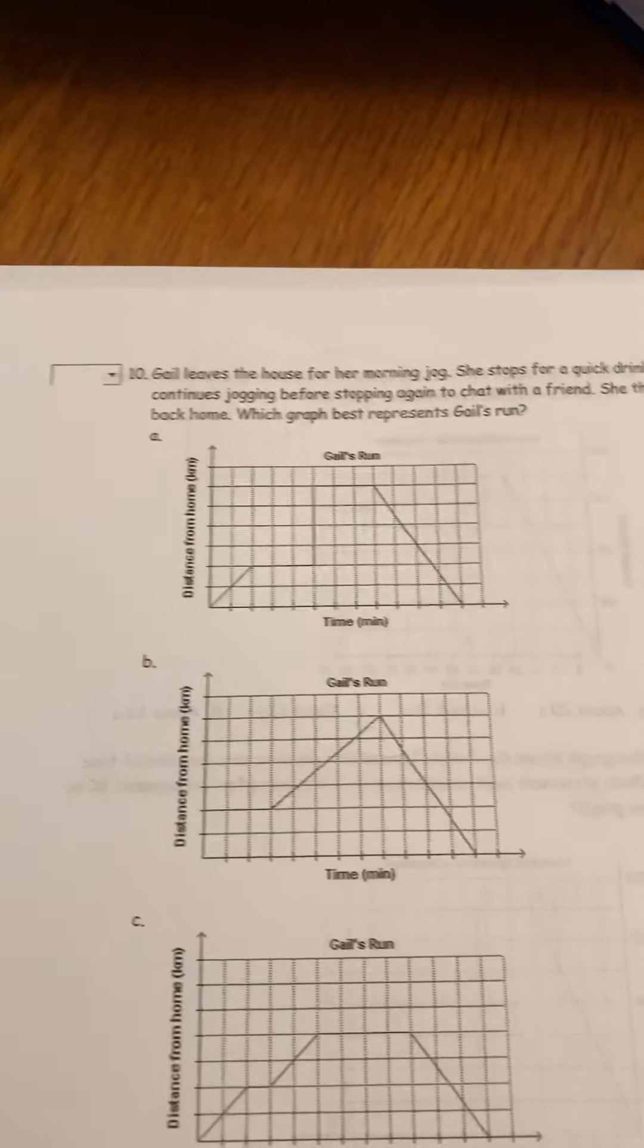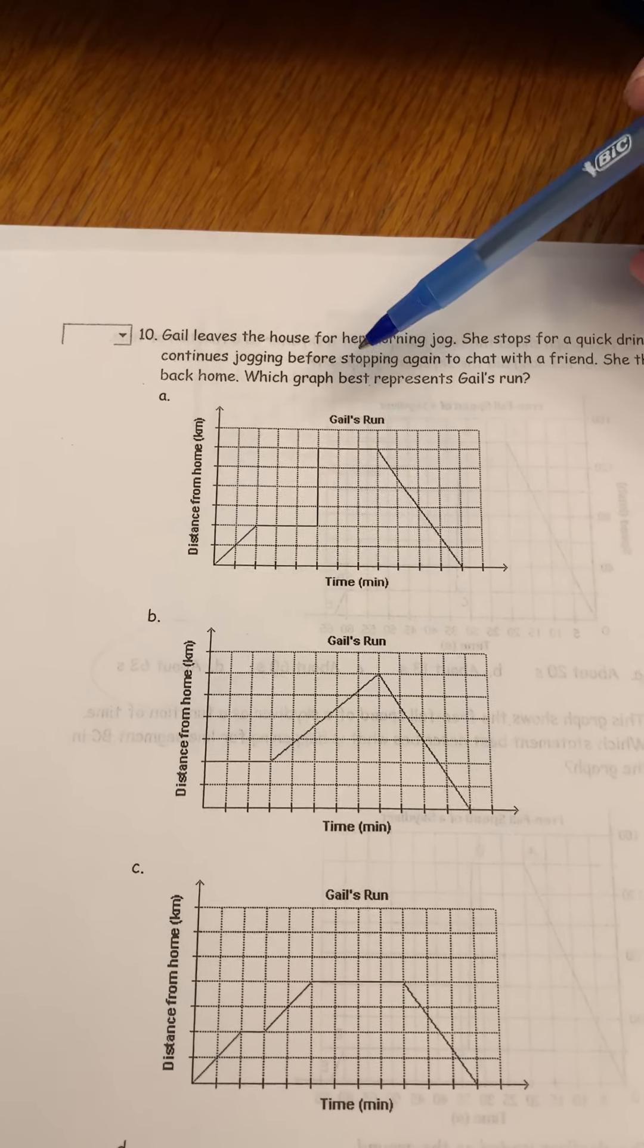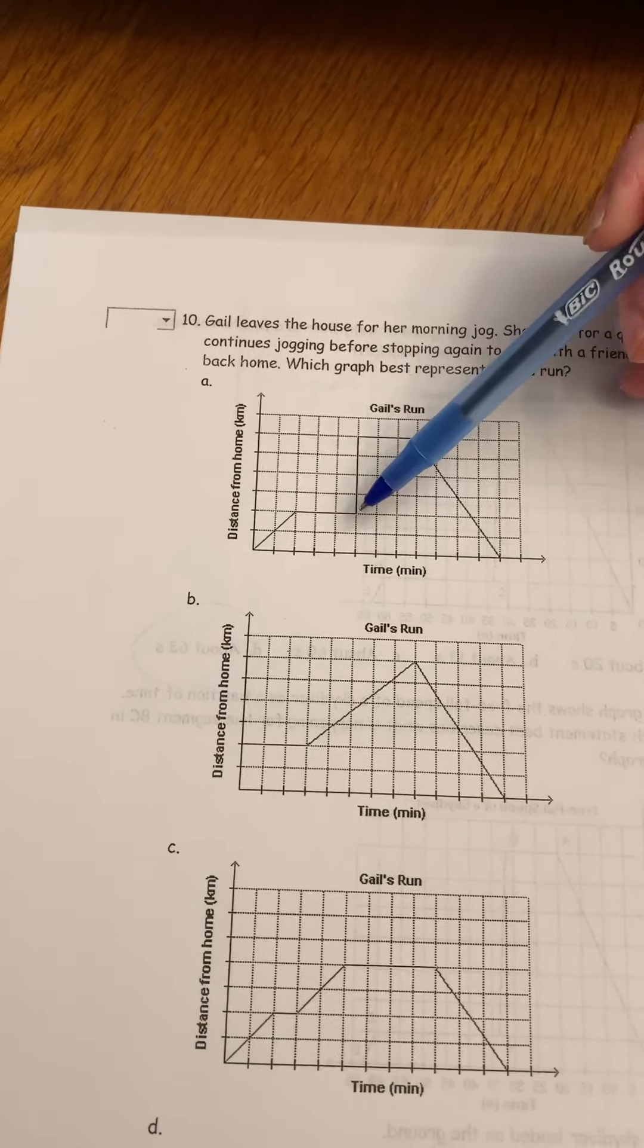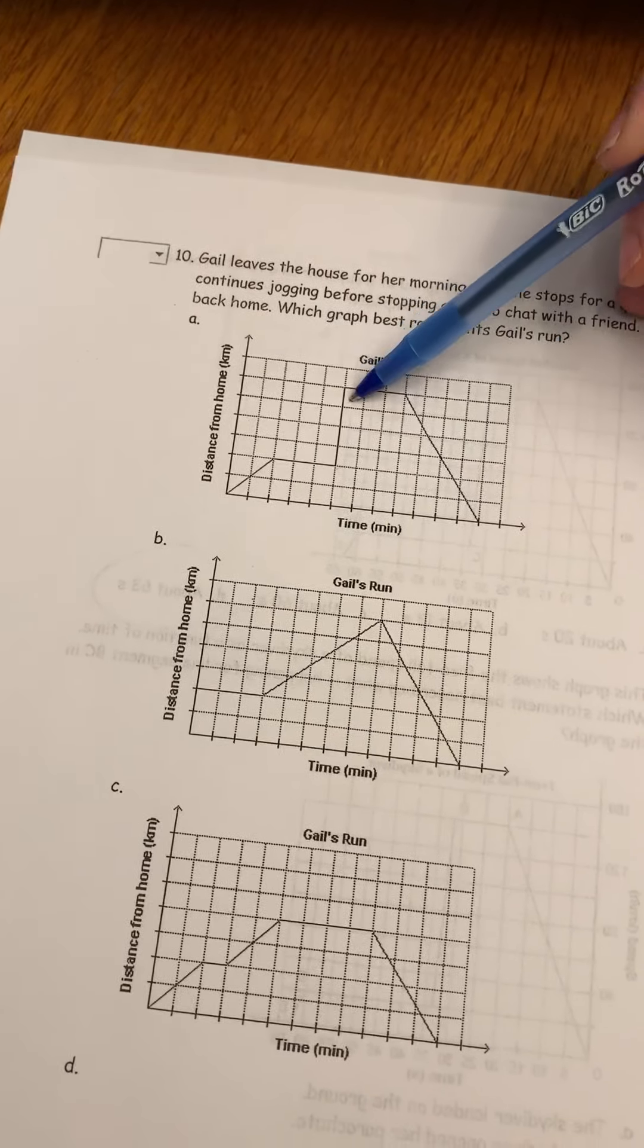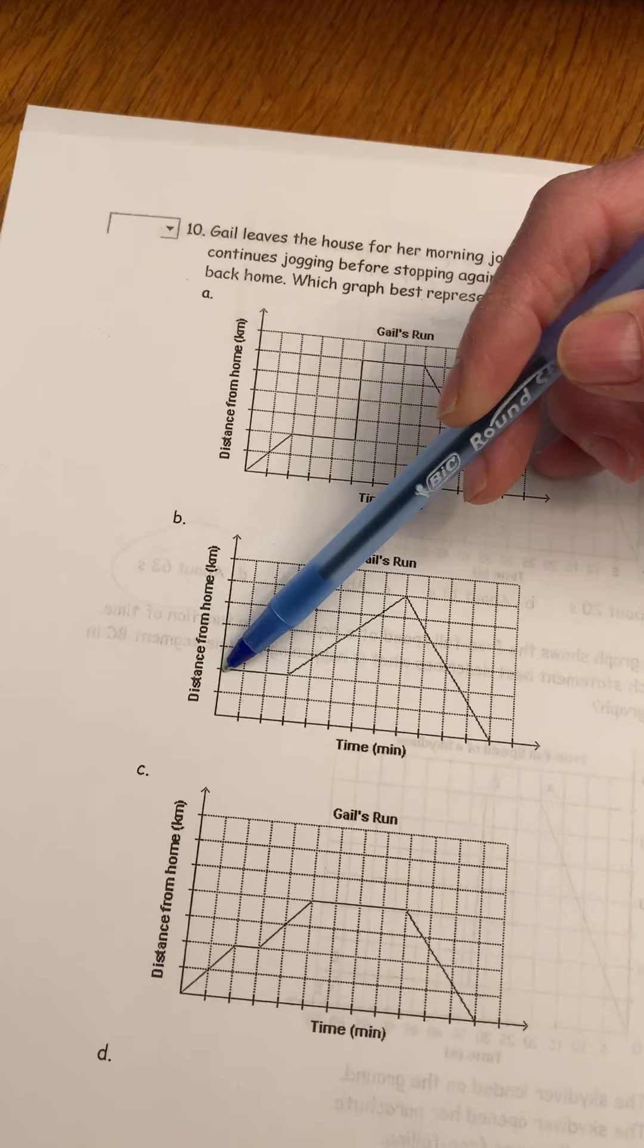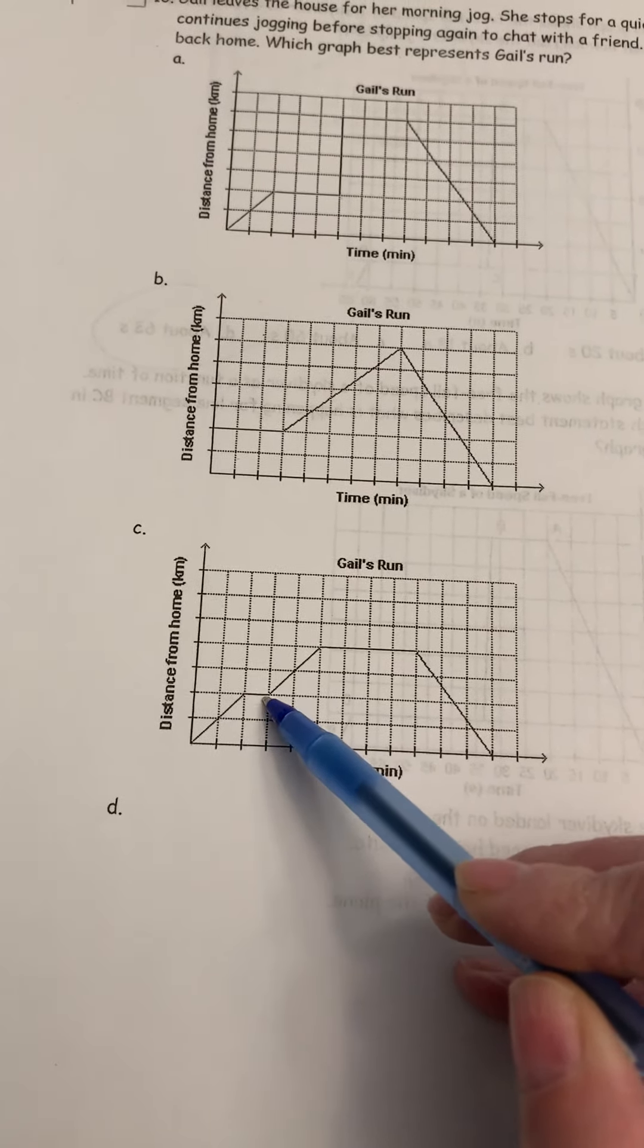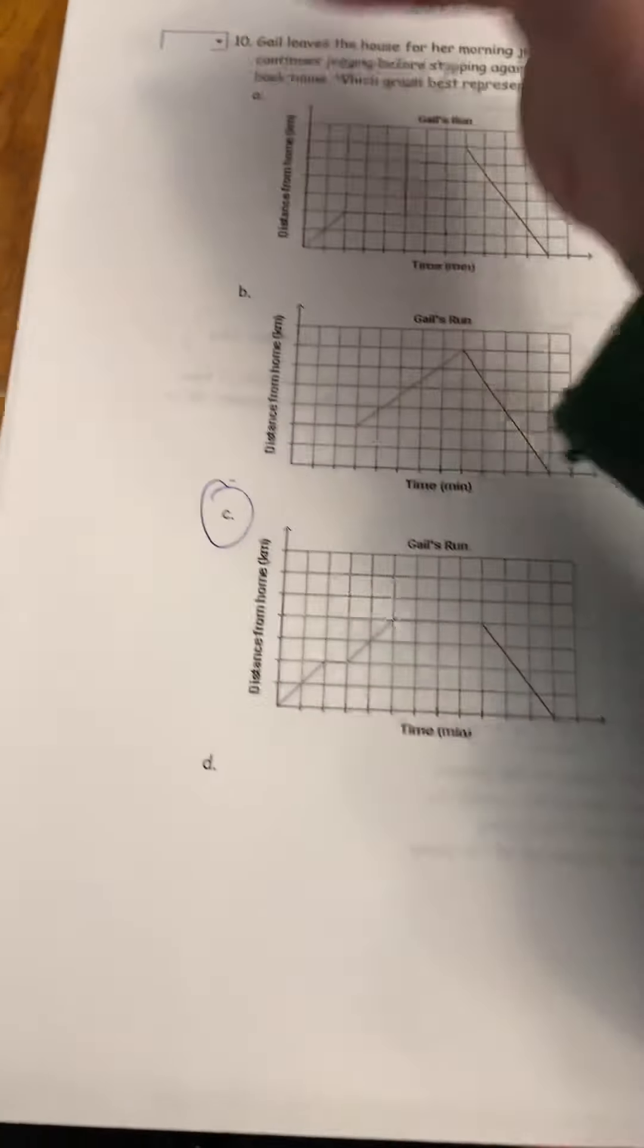All right, Gail's leaving her house for a morning jog. So she stops for a quick drink, then she continues jogging before stopping again to chat with a friend, and then she jogs all the way back home. This one here shows the stopping, but then that's just like a massive distance with no time being used, so that one's not working. This one shows that Gail started like distance from home, so that's not working. This one here though, so she jogs a little bit, she stops for a drink, she jogs a little bit more, she stops with a friend, chat with a friend, and then she jogs all the way back home. So that best describes Gail's run right there.